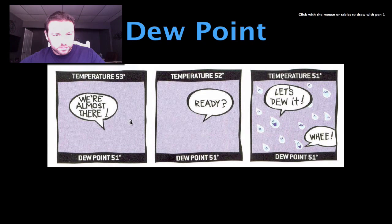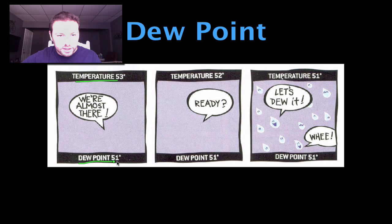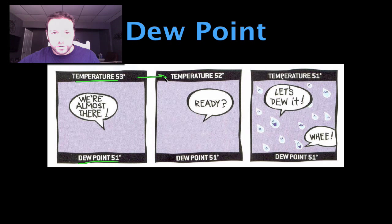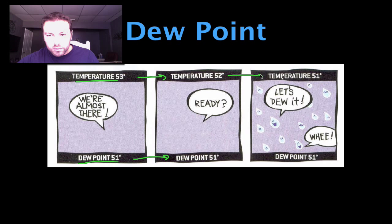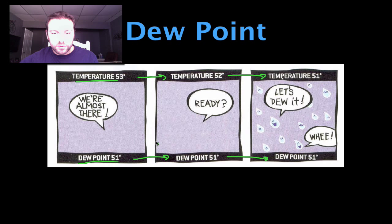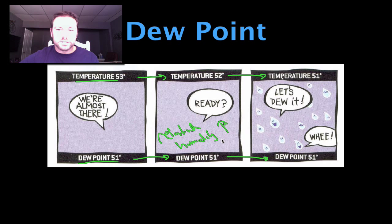Here's a little cartoon to illustrate. The temperature is 53 degrees and the dew point temperature is 51. Looking at our parcel of air, something is saying 'we're almost there.' As the temperature drops from 53 to 52 degrees, the dew point temperature stays the same. Finally, when the temperature reaches the dew point temperature, it begins to rain. As the air temperature reaches the dew point, relative humidity keeps increasing until the air becomes fully saturated and it rains.